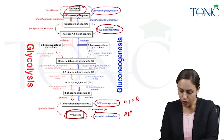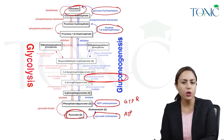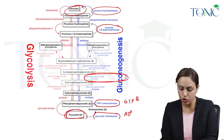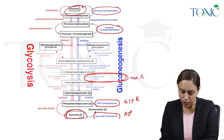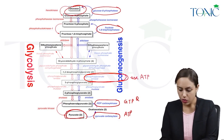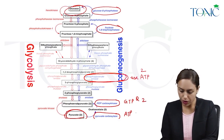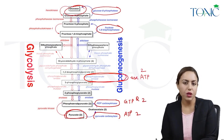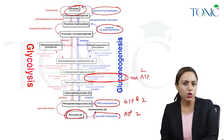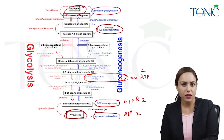Phosphoglycerate kinase, when used in glycolysis, produces ATP, but when used in the opposite direction in gluconeogenesis, it will use ATP. Since everything is multiplied by 2, that gives 2 ATP for carboxylase, 2 GTP for PEPCK, and 2 ATP for phosphoglycerate kinase. The total is 4 ATP and 2 GTP, or 6 high energy bonds.